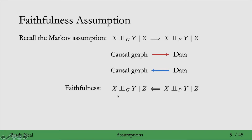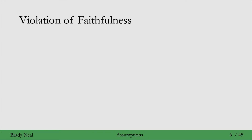The faithfulness assumption is just the converse of the Markov assumption. Using faithfulness, we can search for conditional independencies in the data distribution p, and once we find those, that tells us something about the graphical structure — specifically, what is d-separated from what.